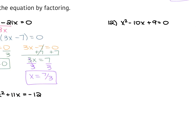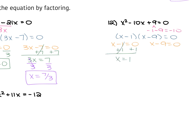For number 12, you have x squared minus 10x plus 9 is equal to 0. Your a is 1, so find factors of 9 that add up to be negative 10. Those are negative 1 and negative 9, which add to give you negative 10. So this factors to be x minus 1 times x minus 9 is equal to 0. Setting each factor equal to 0: x minus 1 equals 0 gives x equals 1; x minus 9 equals 0 gives x equals 9. So your two solutions are 1 and 9.